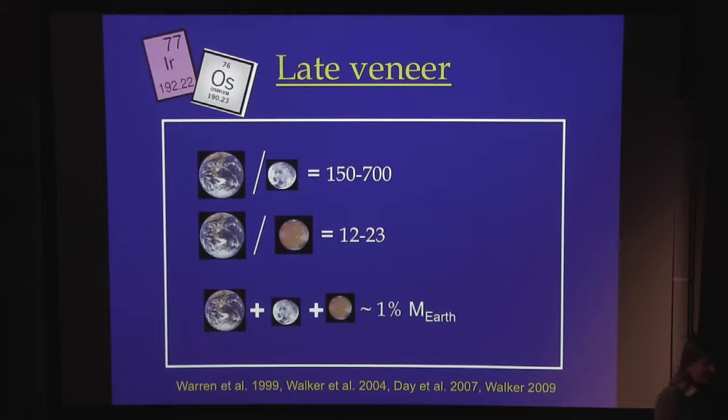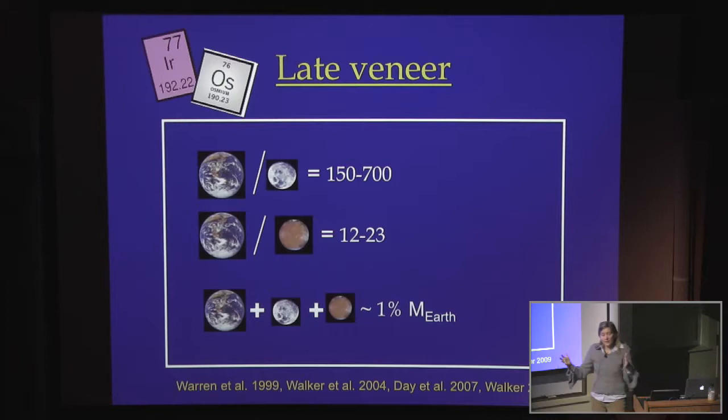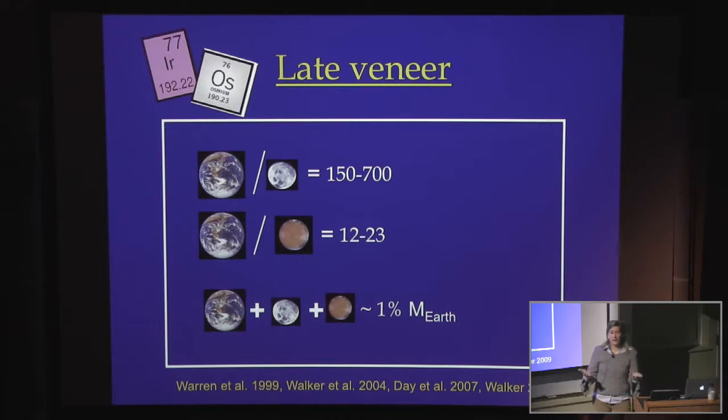You can repeat the same exercise for rocks from the Moon and Mars. In terms of relative ratios, the Earth accreted a few hundred times more — maybe 150 to 700 times more — material as late veneer compared to the Moon, and about 10 to 20 times more material as late veneer compared to Mars. That's the geochemical evidence that leftover planetesimals really did exist in the terrestrial planet region.